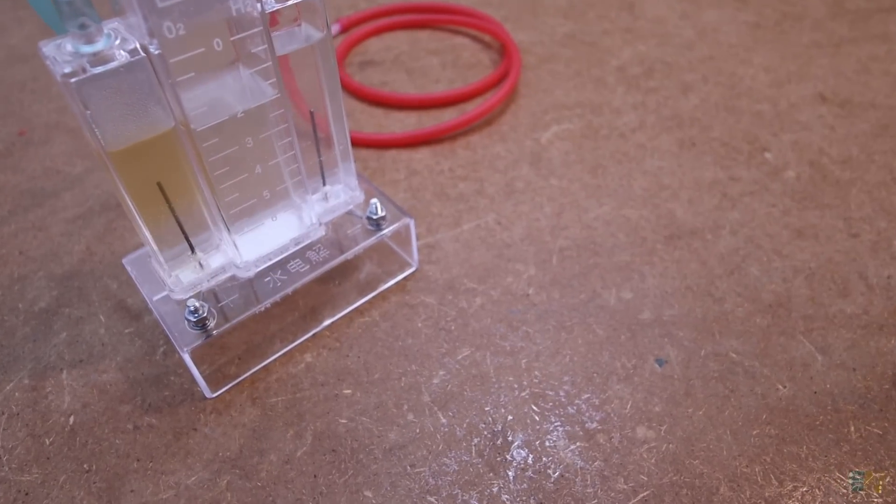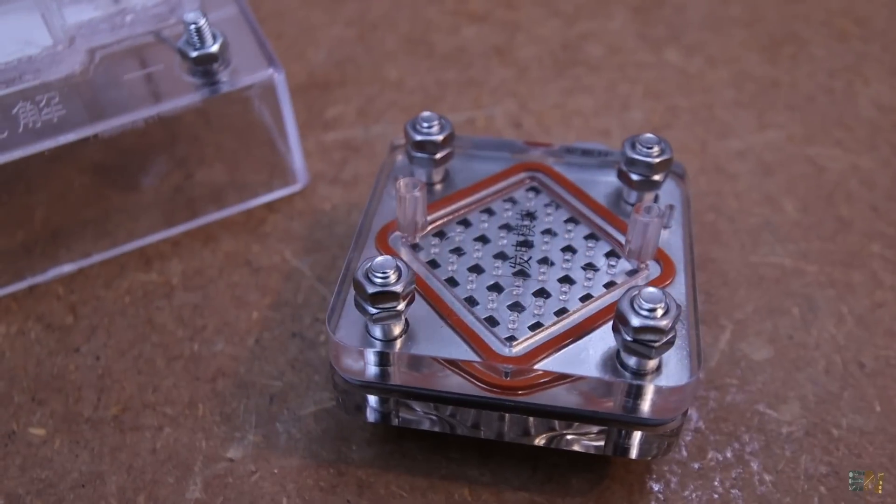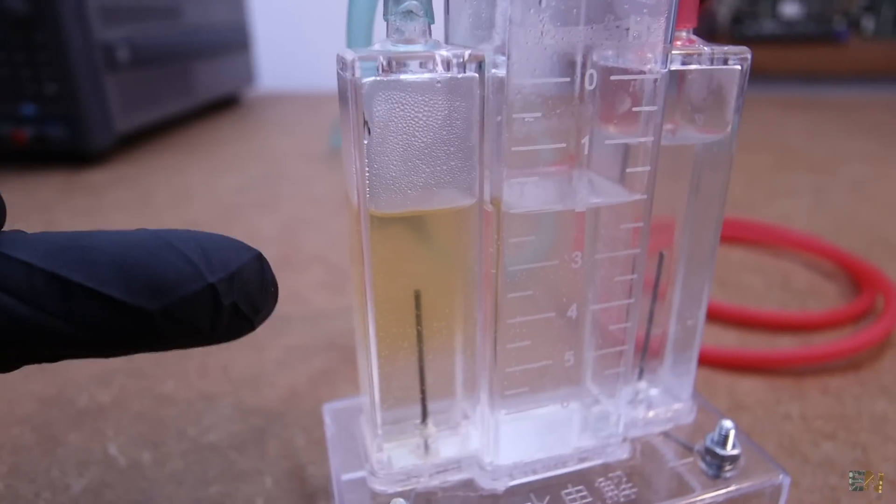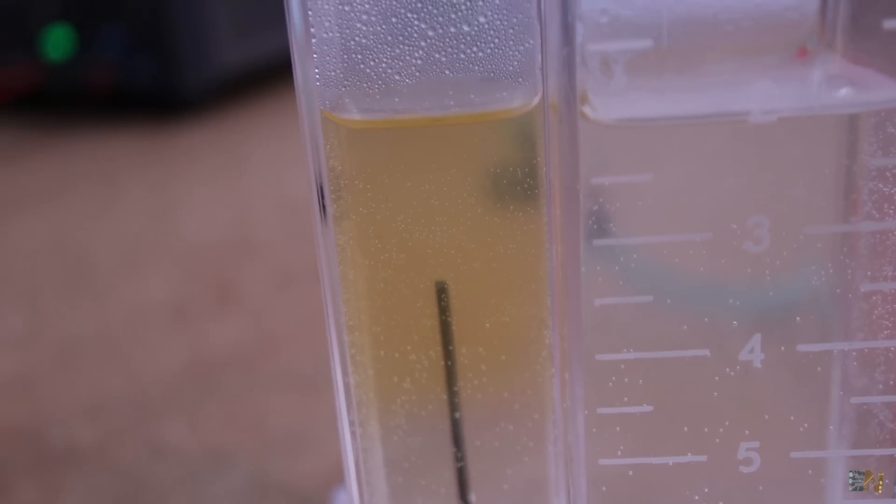Anyway, we now have the hydrogen and the oxygen, so let's add the fuel cell to this setup. And by the way, the brown color stuff inside of the water could be manganese dioxide that is formed as a residue.